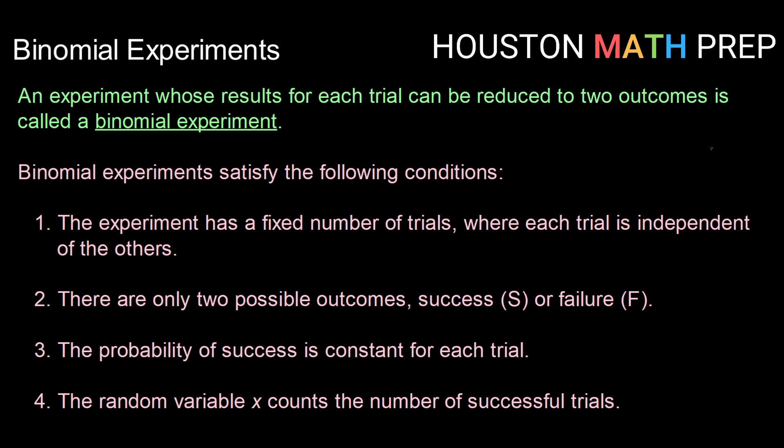Binomial experiments have to satisfy the following four conditions. Number one, the experiment must have a fixed number of trials from the beginning and each trial needs to be independent of the others.